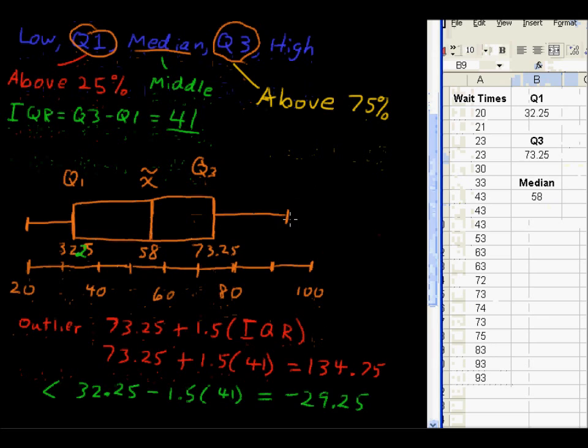By the way, if you did have an outlier, you would just use the next lowest or next highest value to close the whiskers. All right, there it is. Some quartiles and a boxplot.